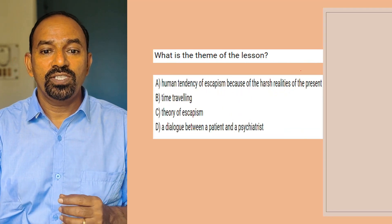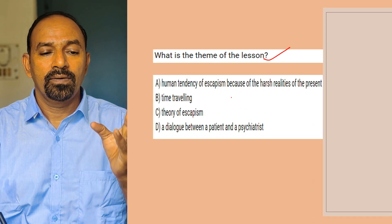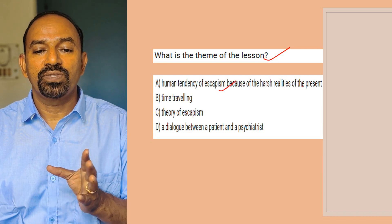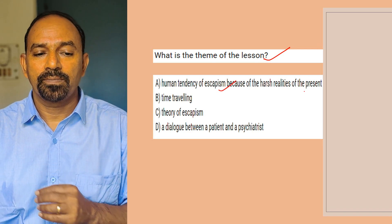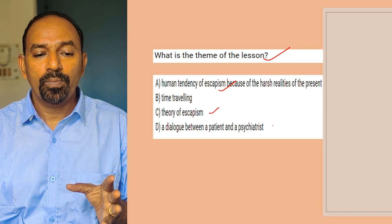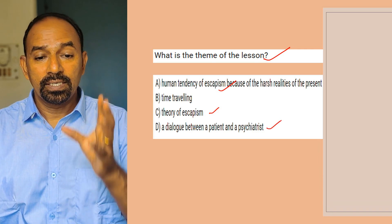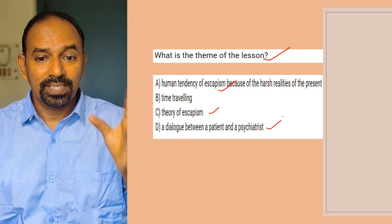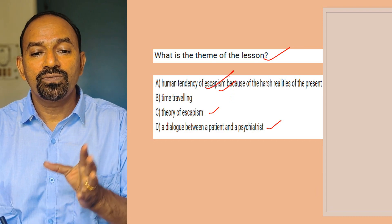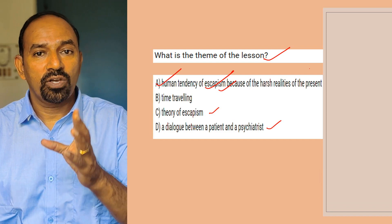Second question: What is the theme of the lesson 'The Third Level'? Options: human tendency of escapism because of the harsher realities of the present; time traveling; theory of escapism; a dialogue between a patient and a psychiatrist. The central theme is human tendency of escapism because of the harsher realities of the present. So A is the right option.